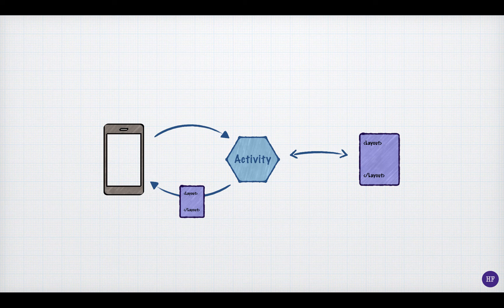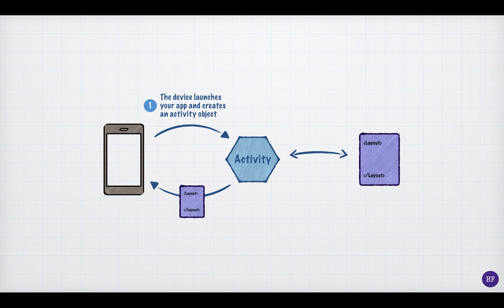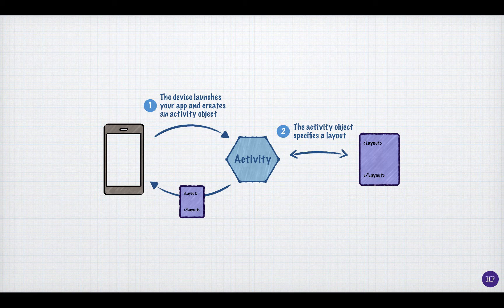Let's look at how a simple Android application starts up. First, the device launches your application and your initial activity object is created. The object is an instance of a Java activity class that you created in your application. Remember that an activity is associated with a screen. For that reason, the activity object must specify how things are laid out on the screen, so it calls a layout resource. Recall that resources are referenced using XML files, so the layout resource is an XML file.